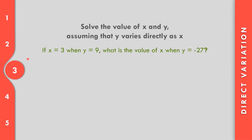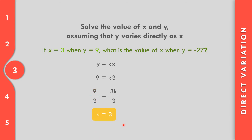How about number three? If x equals 3 when y equals 9, what is the value of x when y equals negative 27? Our equation is y equals kx. Substituting: 9 equals k times 3. Dividing both sides by 3: 9 divided by 3 is 3, so k equals 3. The value of k is equal to 3.